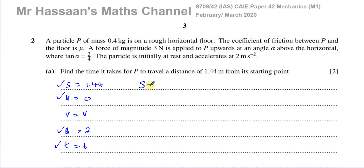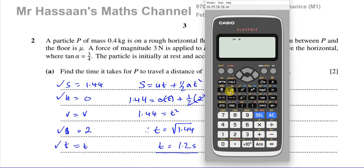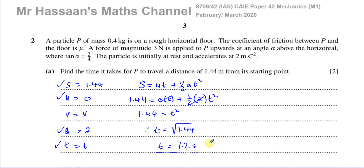The equation we use is S equals UT plus one half A T squared. S is 1.44, U is 0, so the UT term cancels to give 1.44 equals one half times 2 times T squared, which simplifies to 1.44 equals T squared. Therefore T is the square root of 1.44. We don't consider the negative square root because time can't be negative. The square root of 1.44 equals 6 over 5, which is 1.2. So the answer to part A is 1.2 seconds.